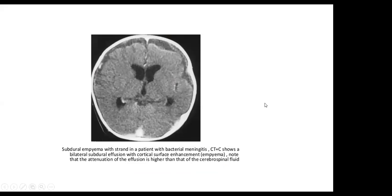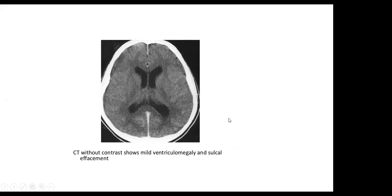One complication of meningitis is the development of subdural empyema. In this case, there are bilateral frontal subdural effusions; the fluid is not as attenuated as CSF in the ventricle. Another complication is the development of hydrocephalus — in this case, there is mild dilatation of the ventricles and effacement of the sulci.